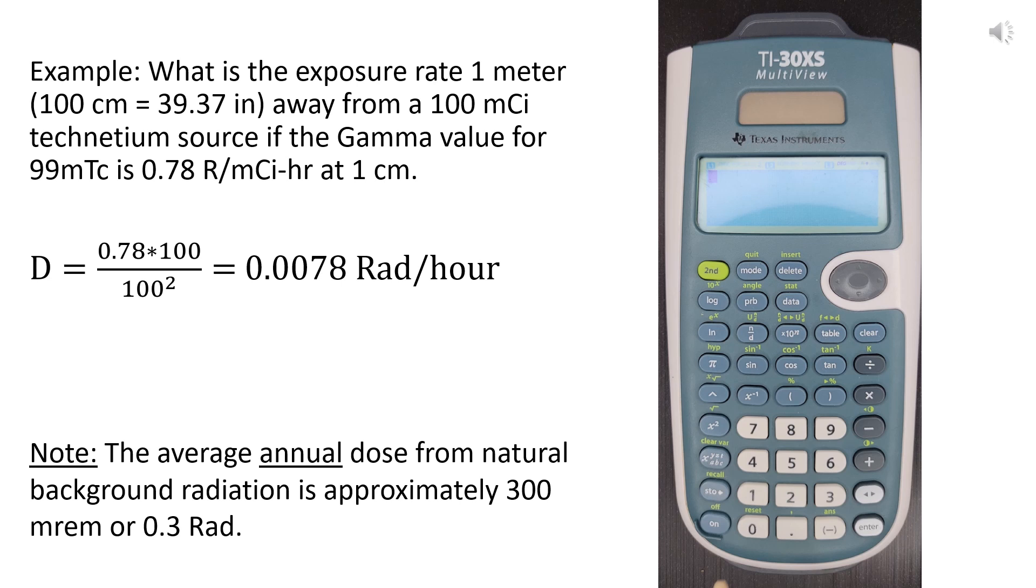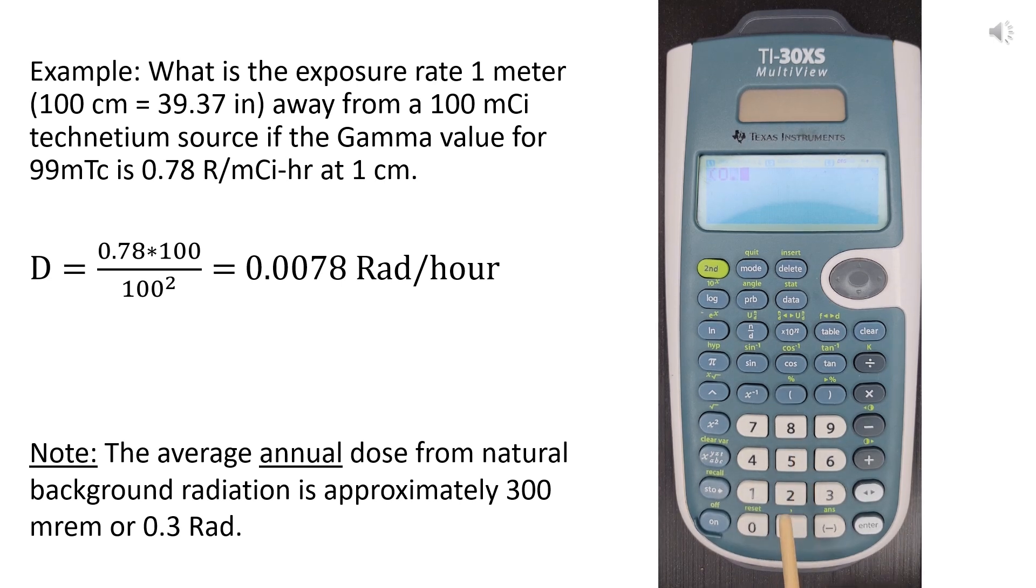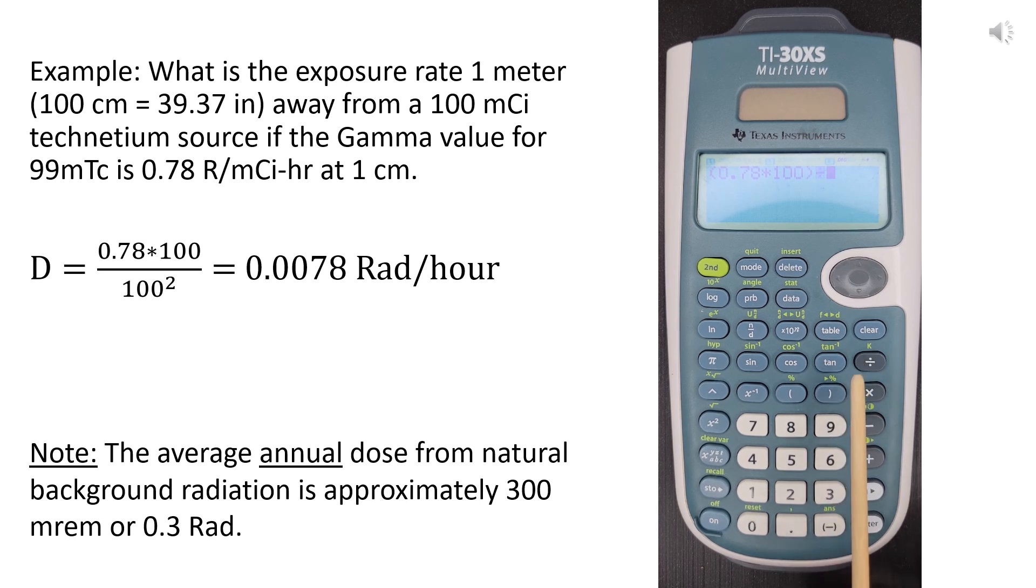In this case, we simply have the exposure rate equals (0.78 times 100) divided by (100 to the power 2), which equals 0.0078. Note that the average annual dose from natural background radiation is approximately 300 millirems, or 0.3 rads.